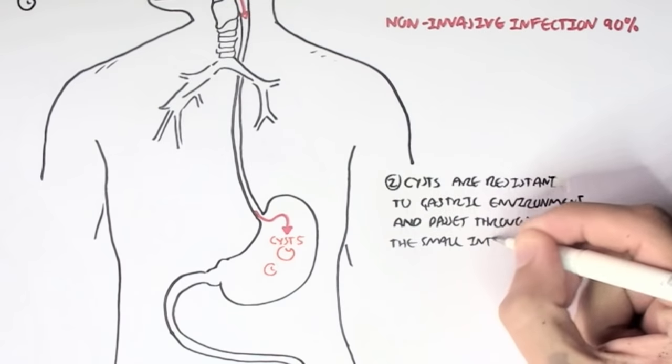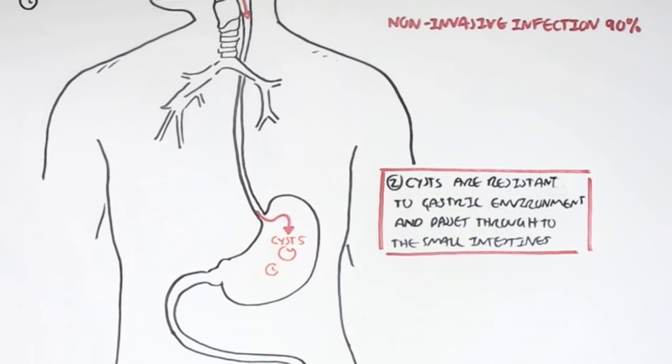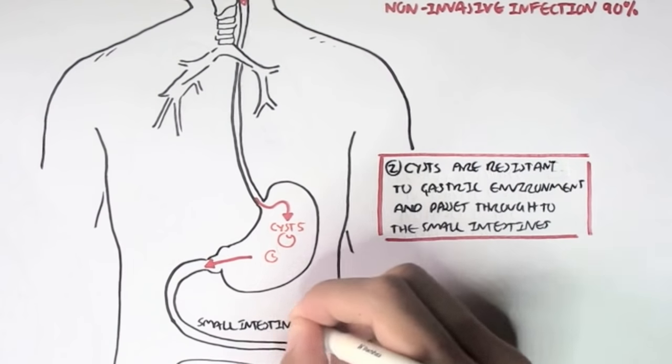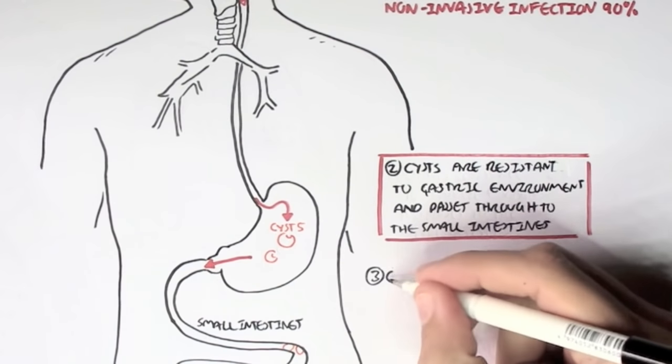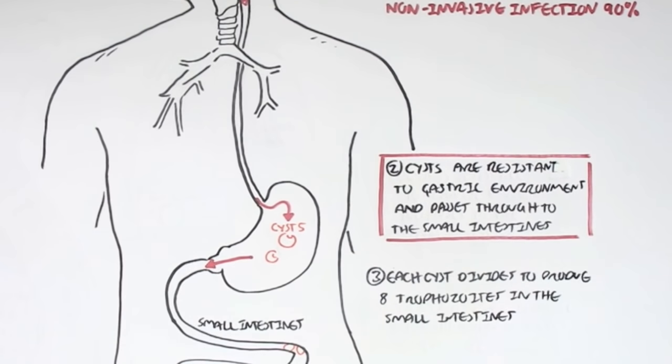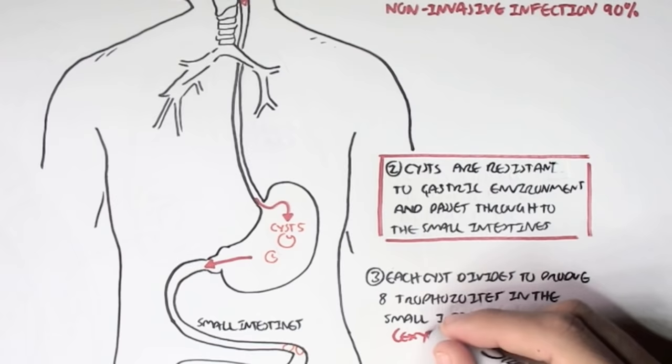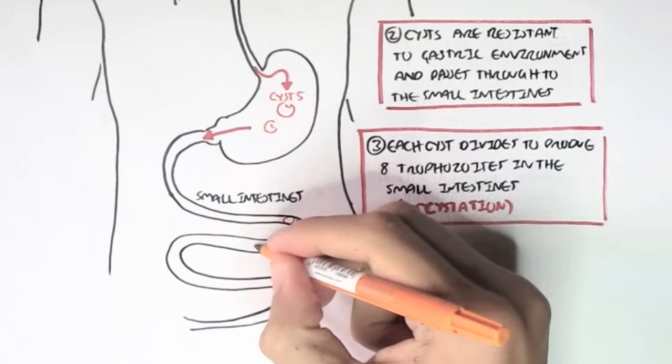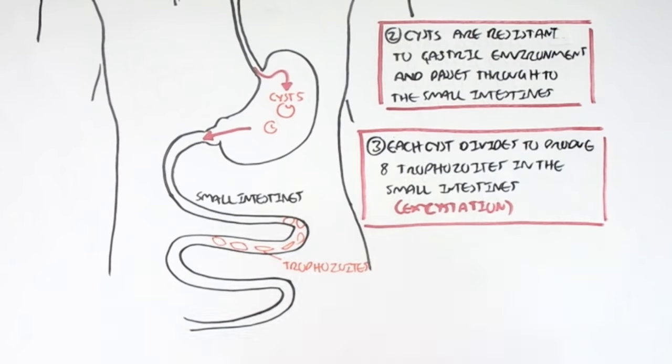These cysts pass and move into the small intestine. Each cyst can divide and produce 8 trophozoites, the mobile form of Entamoeba histolytica, in the small intestine. This process is known as excystation, and this is where the cysts produce trophozoites in the small intestines.